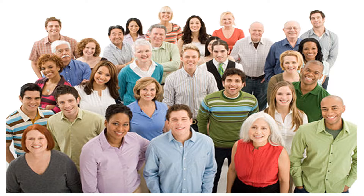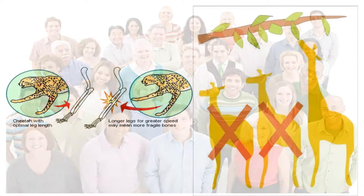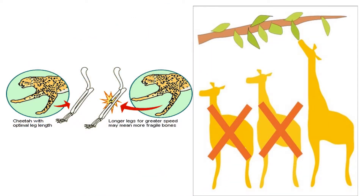Traits are determined by your genes, but they can also be influenced by the environment. Natural selection is the environment's way of allowing species with the most successful traits to survive and reproduce. Species with unsuccessful traits don't survive well in their environment and therefore die off before they can reproduce. That's why we don't see giraffes with short necks or cheetahs with really long legs.